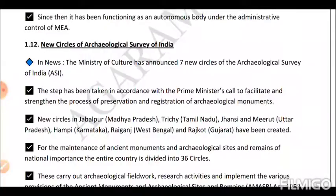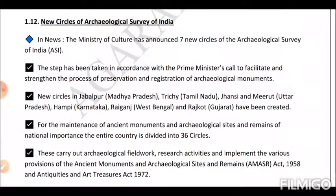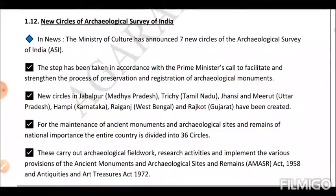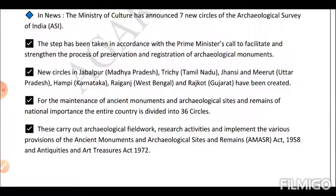Next is the new circles of the Archaeological Survey of India. The Ministry of Culture has announced seven new circles of the ASI, in accordance with the Prime Minister's call to strengthen the preservation and registration of archaeological monuments. New circles in Jabalpur (Madhya Pradesh), Trichy (Tamil Nadu), Jhansi and Meerut (Uttar Pradesh), Hampi (Karnataka), Raiganj (West Bengal), and Rajkot (Gujarat) have been created. The entire country is divided into 36 circles, which carry out archaeological fieldwork and research, implementing the Ancient Monuments and Archaeological Sites and Remains (AMASR) Act, 1958, and the Antiquities and Art Treasures Act, 1972.